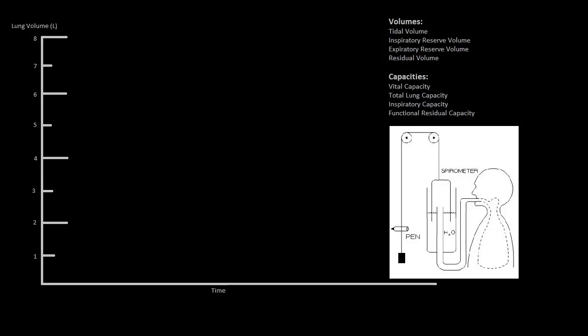You probably have an idea of what a spirometer is or what spirometry is, but just in case you don't, I want to do a quick introduction into the contraption we use to measure pulmonary function. The spirometer is this big contraption seen here, and the test is called spirometry. It is the most common pulmonary function test, and we use it to measure lung volume and the speed of inhalation or exhalation. It's a very useful tool in assessing things like asthma, COPD, pulmonary fibrosis, or cystic fibrosis.